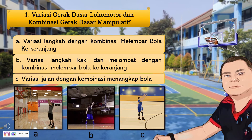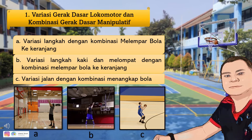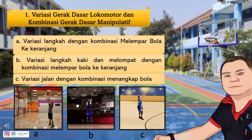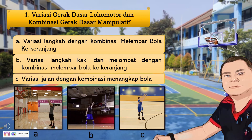Yang C: variasi jalan dengan kombinasi menangkap bola. Ketika bermain bola basket, tidak setiap saat kamu terus berlari; ada saat-saat tertentu kalian berjalan. Berjalan dapat dilakukan dengan pelan maupun cepat, ke belakang, ke samping, maupun serong. Gerak berjalan dapat dikombinasikan dengan menangkap bola, seperti pada gambar C yang menunjukkan seseorang sedang menangkap bola.